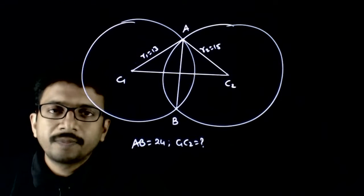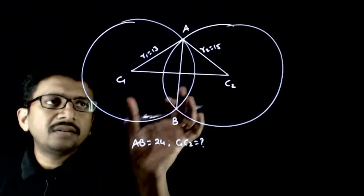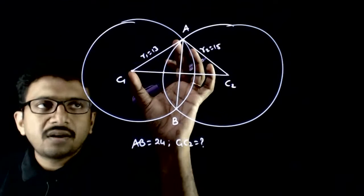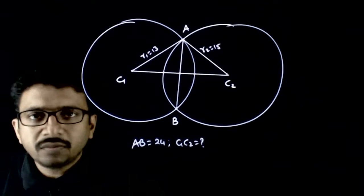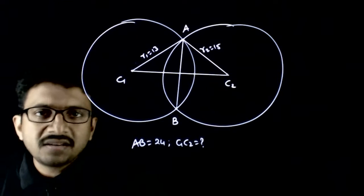Welcome students. In this question, you're given that there are two circles of radius r1 and r2. One is equal to 13, the other is equal to 15.